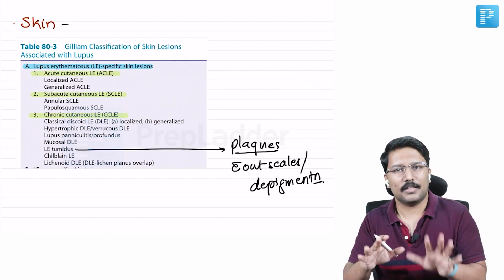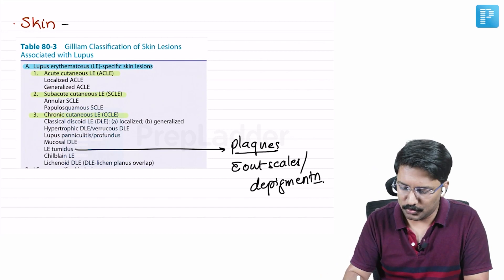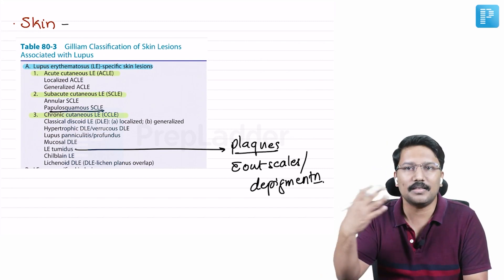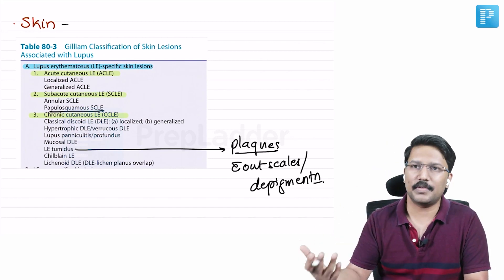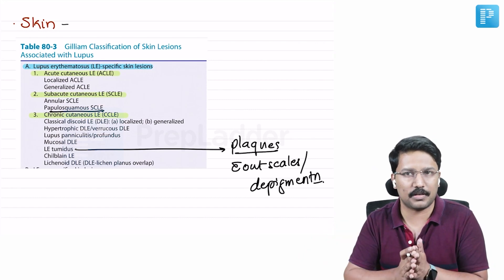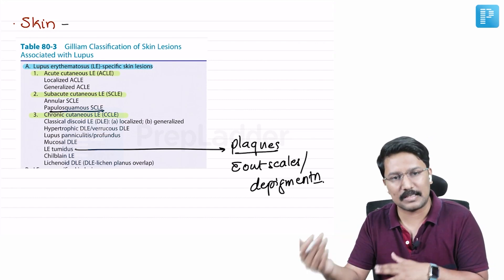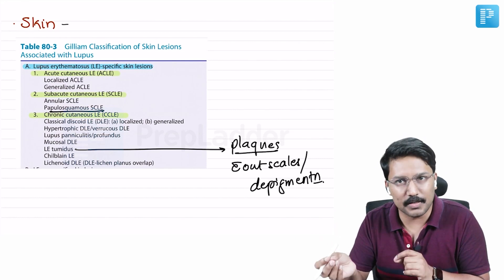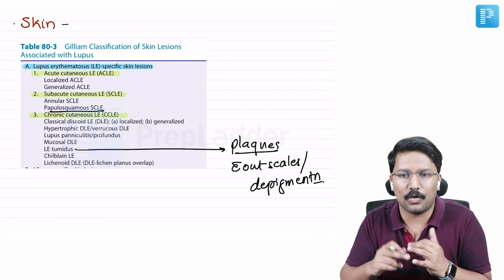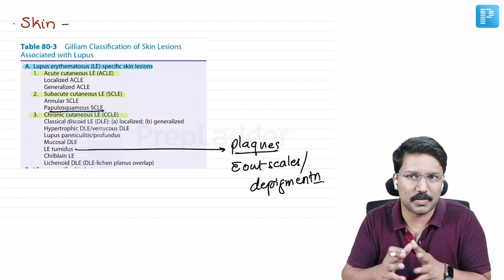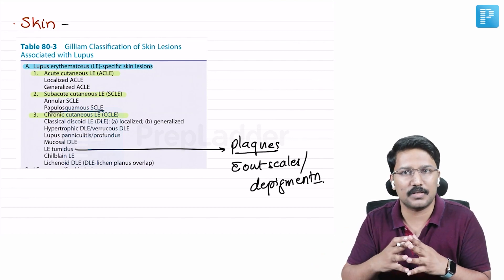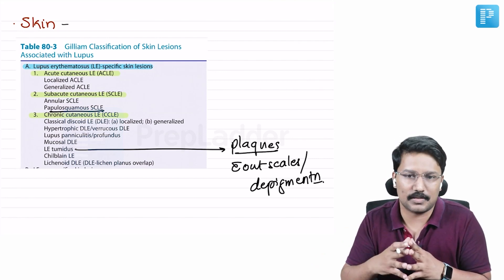Now when we talk about subacute cutaneous lupus erythematosus, there is usually scales present - I told you psoriasiform. On the other hand, when we talk about the classical discoid lupus erythematosus, there is depigmentation. So in this case, in LE tumidus, neither there is scaling nor there is depigmentation, but there are plaques present for sure. That is what we call as lupus erythematosus tumidus.